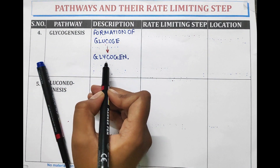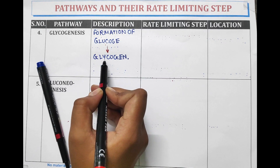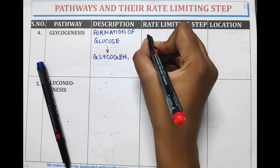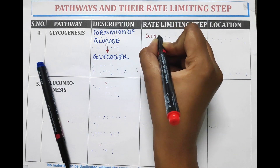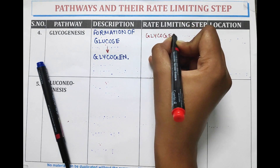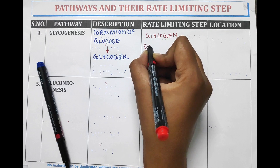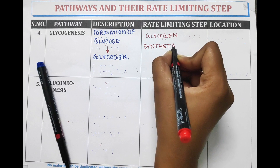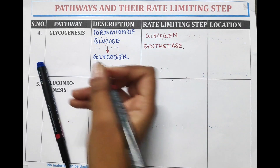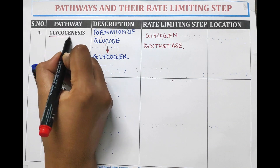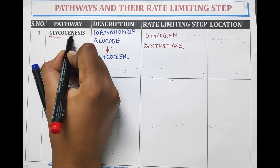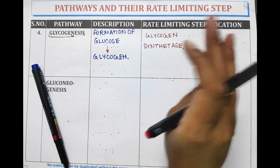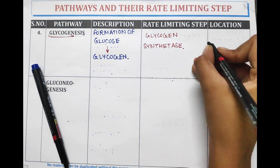Next is glycogenesis. Formation of glucose into glycogen is glycogenesis — glycogen means glycogen and genesis means synthesis. The rate limiting step is glycogen synthetase, and the location of glycogenesis is cytosol.